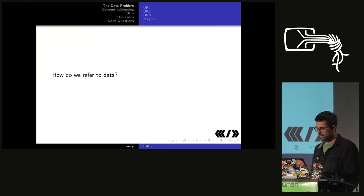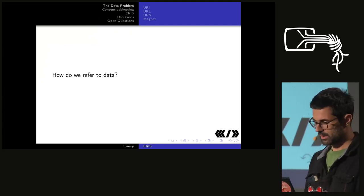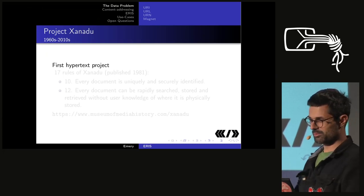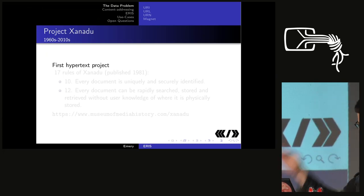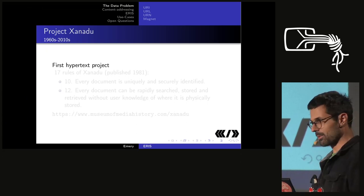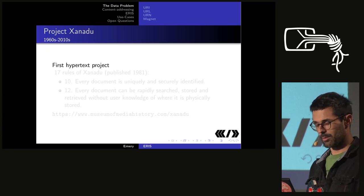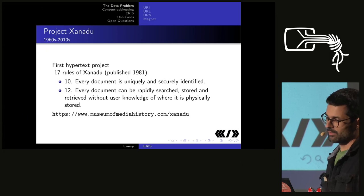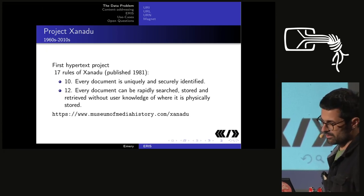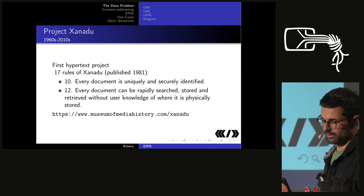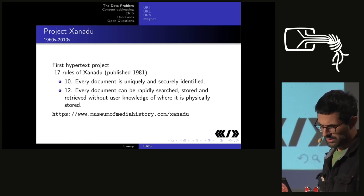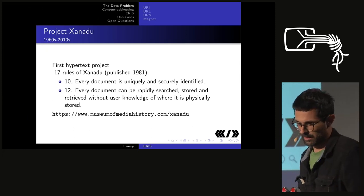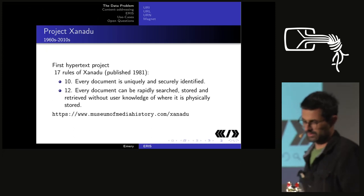So, the problem with data. If you look at how we refer to data, you have to go back to the 1960s to Ted Nelson's project Xanadu, which was the precursor to our web — the first hypertext project that set a lot of the terminology we use now. In 1981, the 17 rules were published as requirements for Xanadu. Rule 10 was: every document is uniquely and securely identified. Rule 12: every document can be rapidly searched, stored, and retrieved without user knowledge of where it is physically stored.